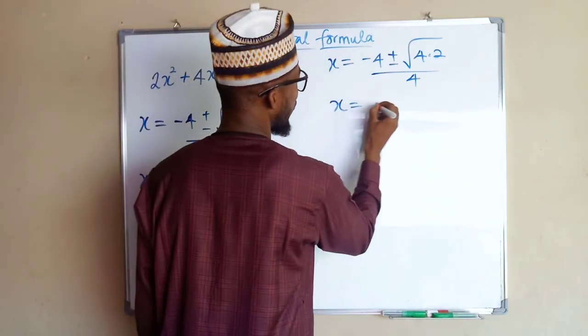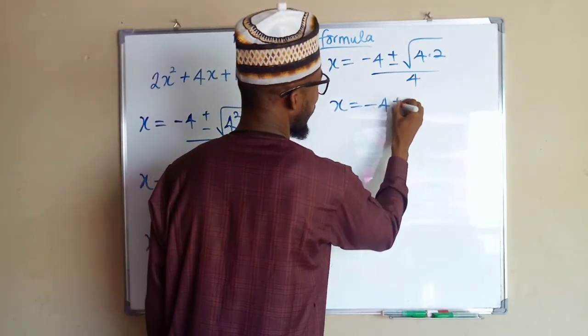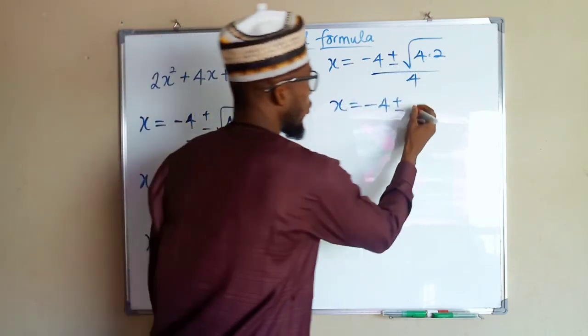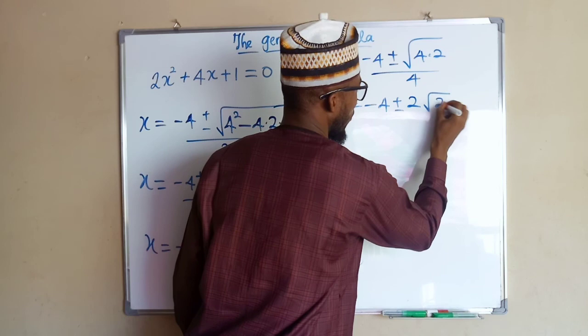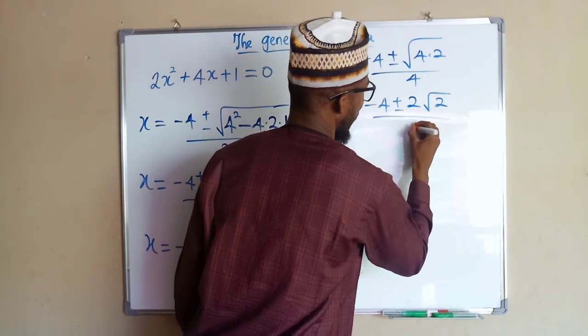x equal to minus 4 plus or minus, the square root of 4 is 2, so we have 2 outside, but 2 remains in the square root, all divided by 4.